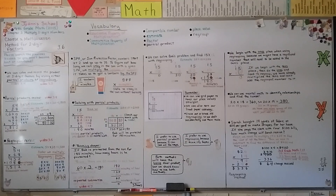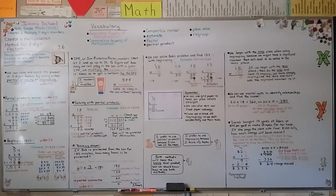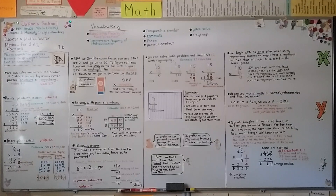You can decide which method you prefer — partial products so you can see all the steps, or regrouping because it may be faster — but you need to learn both methods. In our next lesson, 3.7, we're going to solve word problems using two-digit multiplication with the strategy of drawing a diagram. Have a great day, and I hope to see you there!